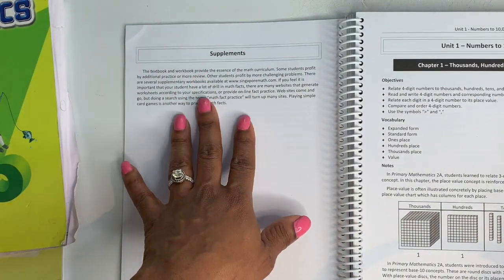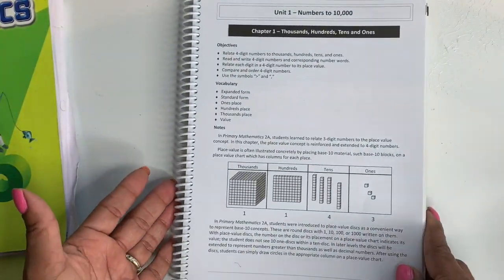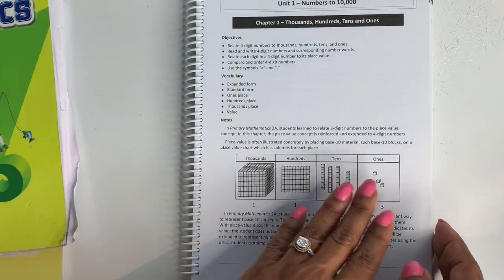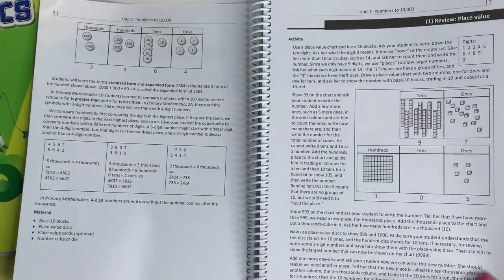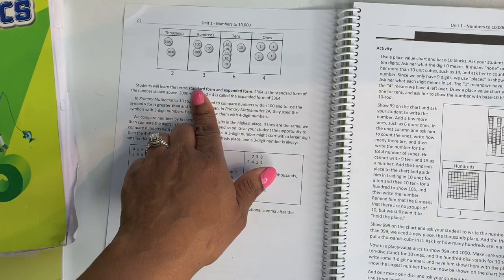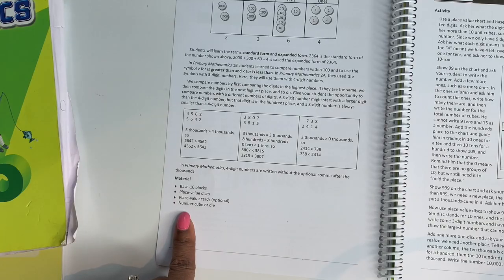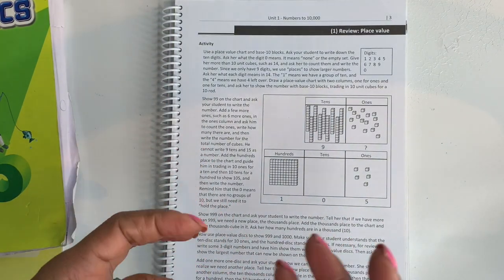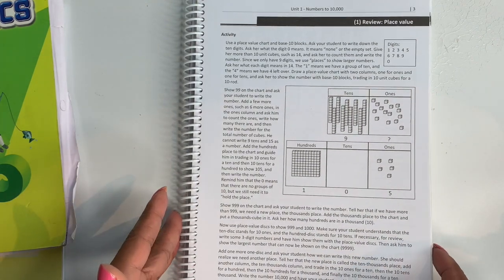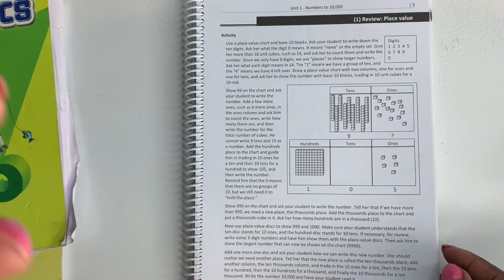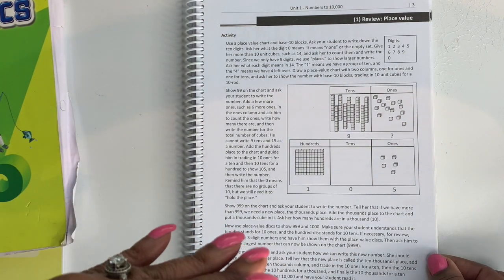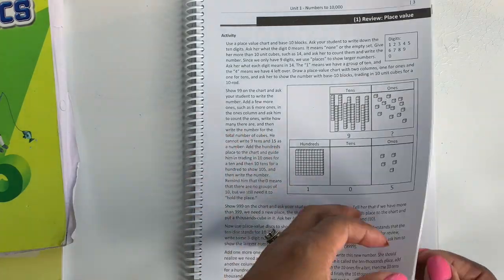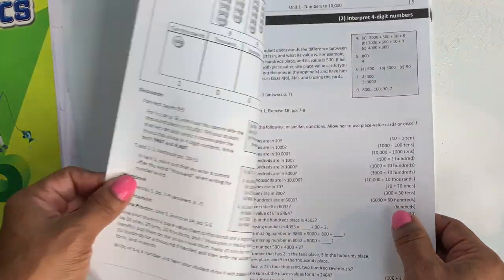And then the supplements, they talk about the workbooks and stuff like that. Read that on your own. And then this is what the lesson looks like. You're ready to start cooking. You have your objectives, the vocabulary, your notes, and then it goes into how are you going to teach the lesson. But these are more of your notes and you see how they bold all the vocabulary. And then at the bottom, they'll have the materials that you'll need for this lesson. And then here's your activity. One thing I like about primary mathematics, it's very hands-on. Very hands-on with the manipulatives.